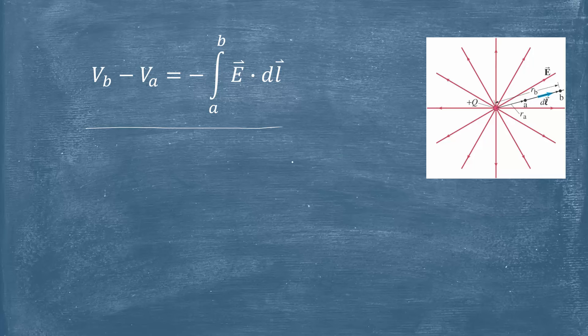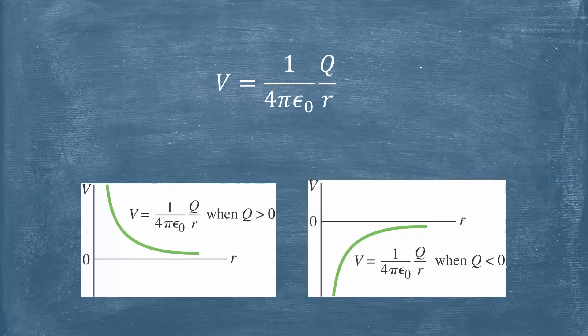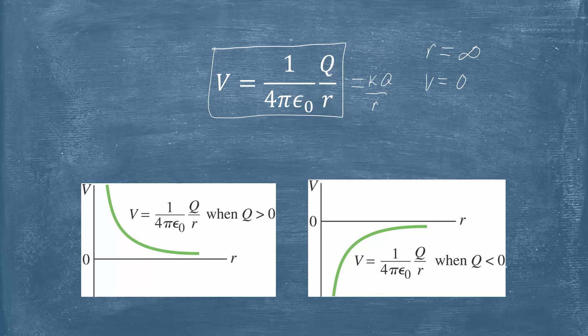So we can go ahead and plug in the electric field due to a point charge which was kQ/r², and then we're going to make this dr. This is exactly the integral we did before for the potential due to a charged sphere, and as long as we make the same choice of having the potential be zero way out at infinity, then we get this nice expression here for the potential due to a point charge, which as always can be written with a k instead of an epsilon naught.